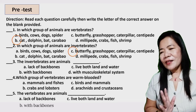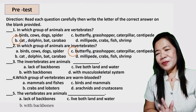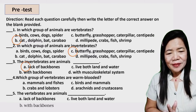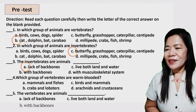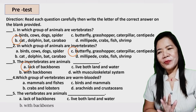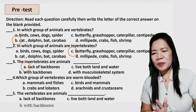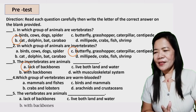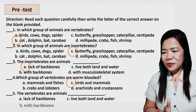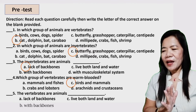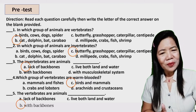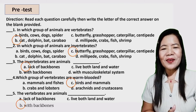Number three, the invertebrates are animals that lack backbones. You got it — letter A. Number four, which group of vertebrates are warm-blooded? Your answer, letter C — correct. Number five, the vertebrates are animals with backbones. You got it! Congratulations!